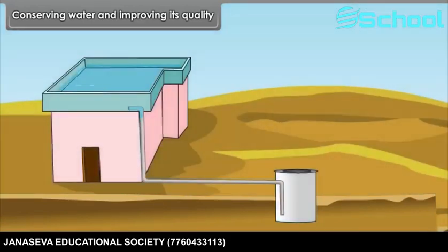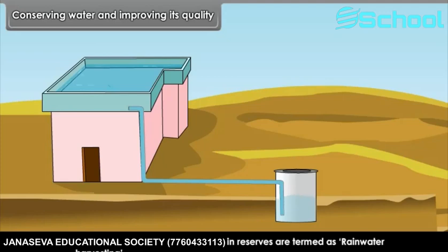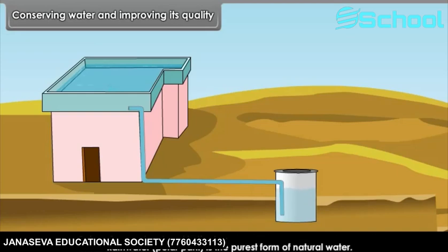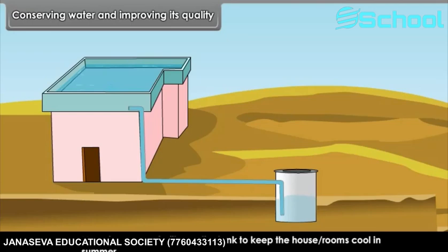Rainwater harvesting. Methods for keeping rainwater in reserves are termed as rainwater harvesting. Rainwater can be stored in a tank for three to five years, making it a regular source of drinking water. Rainwater, also called polar pani, is the purest form of natural water. It is often used to cure ailments of sick people. Many houses are built near tanks to keep the house or rooms cool in summer.